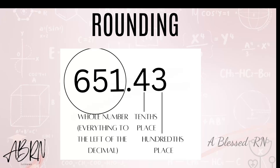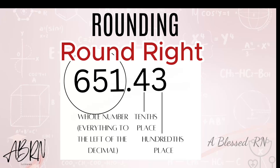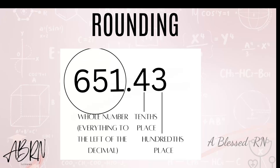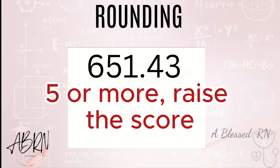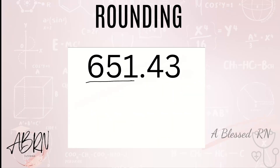The rule to rounding that I want you to remember is: round right. Whatever place it tells you to round to, go there, then go one decimal place to the right. If that number is four or below, it's a no-go. If it's five or more, raise the score. Let me show you what I'm talking about.